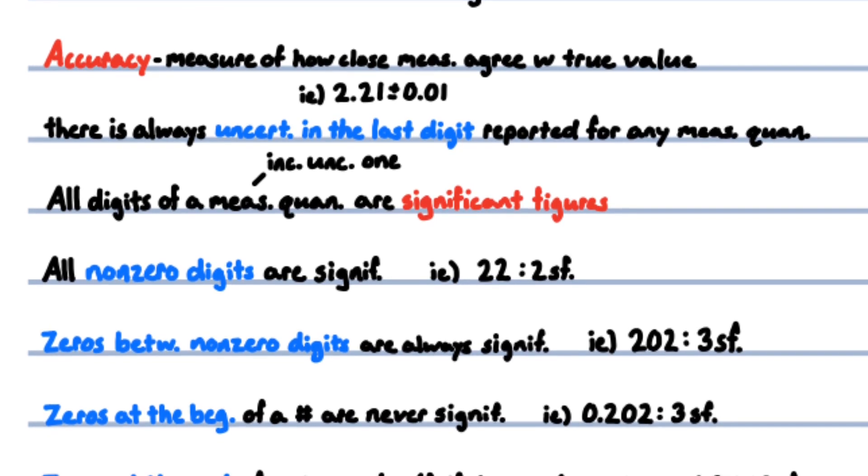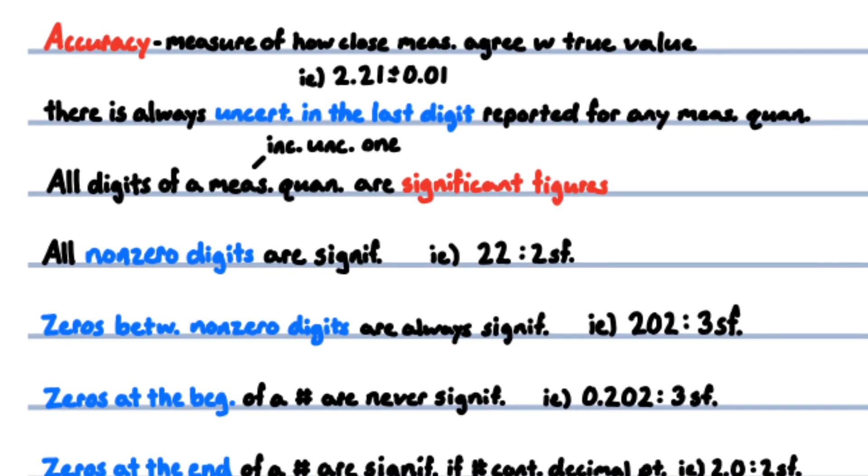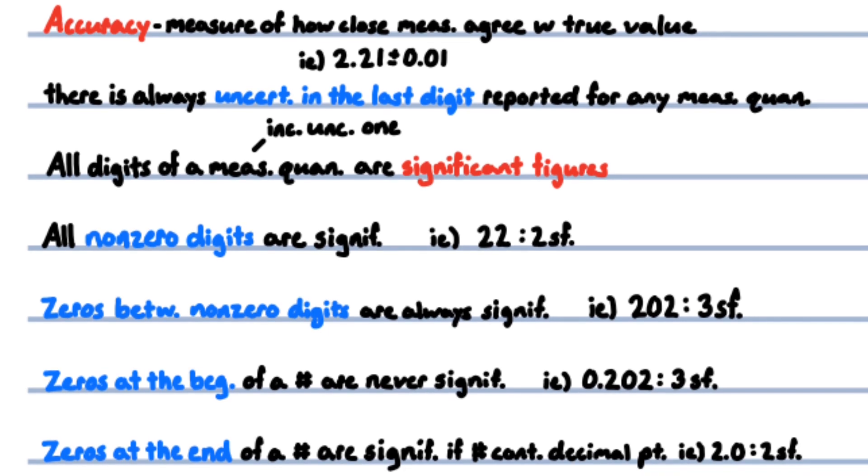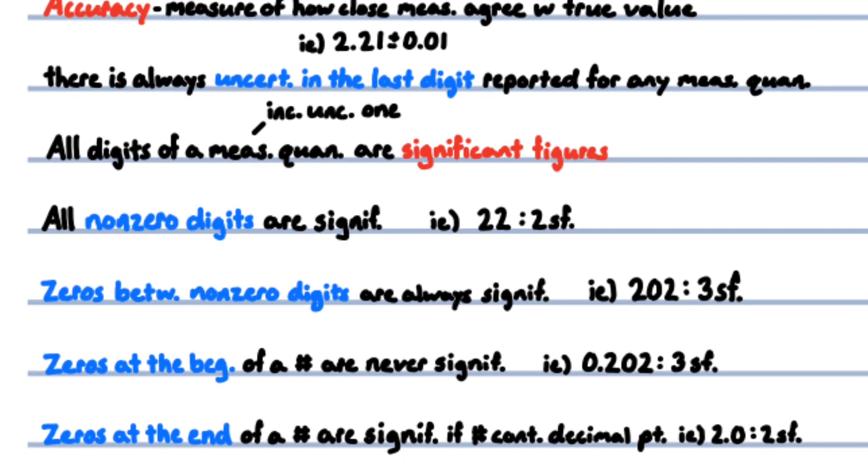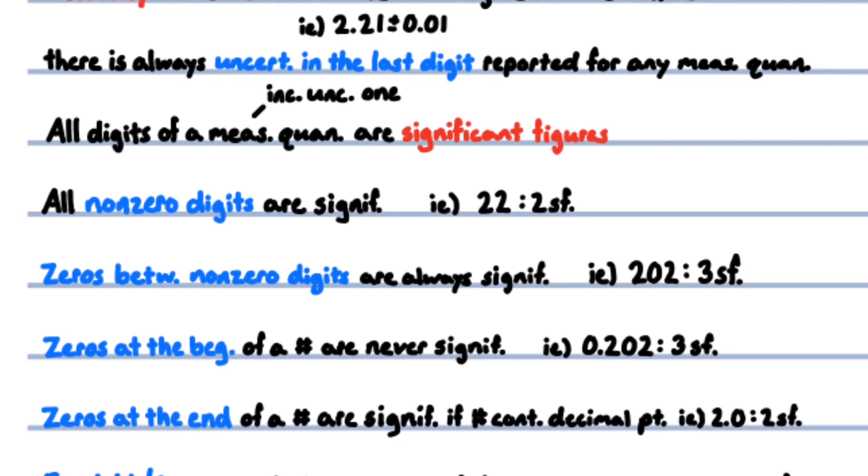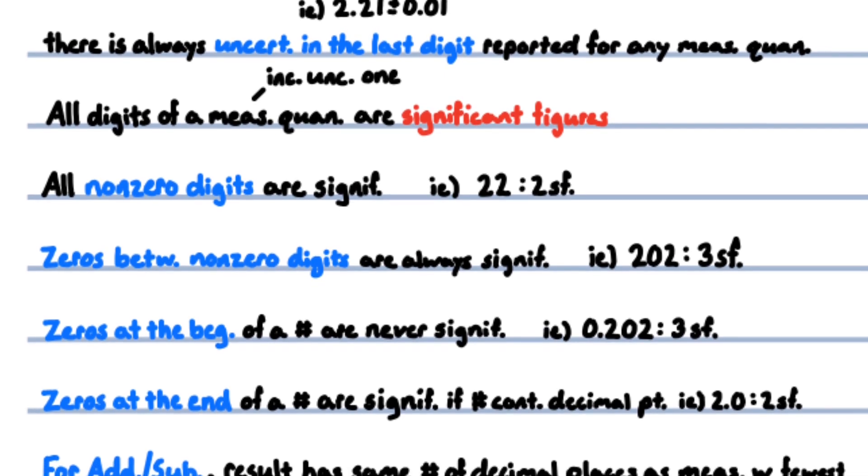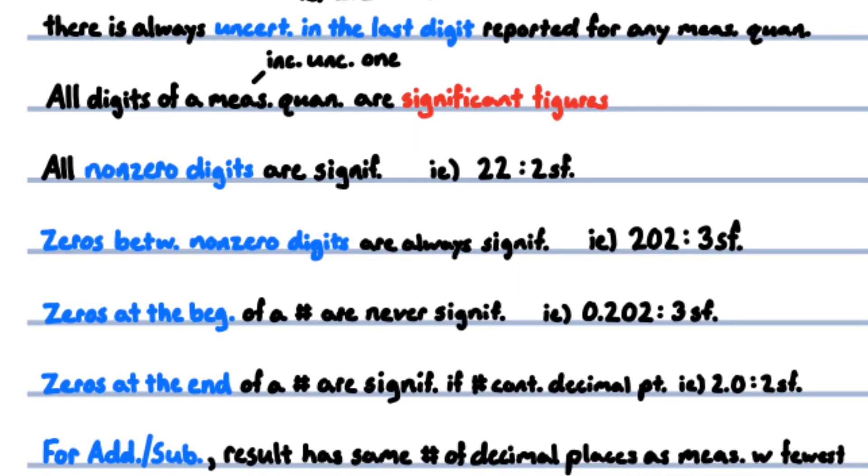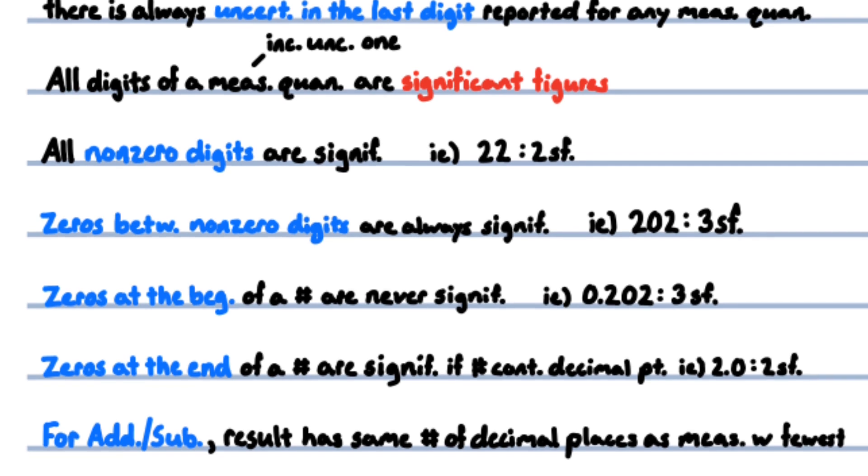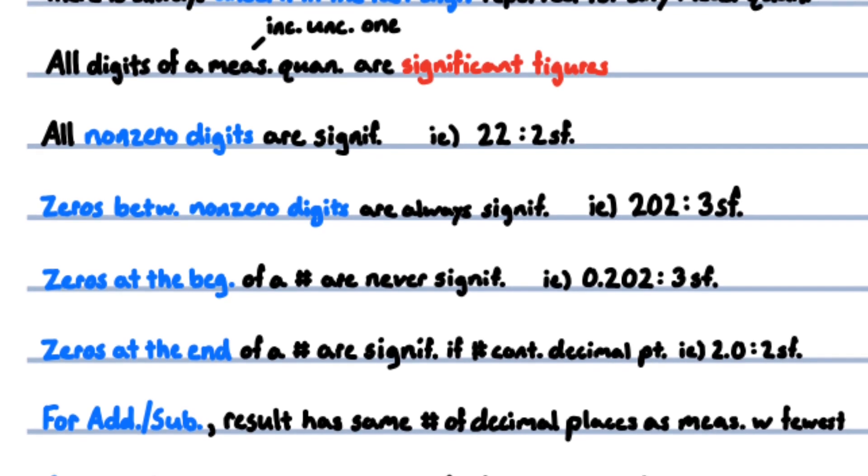All digits, including the uncertain one, of a measured quantity are significant figures. All non-zero digits are significant, for example, 22 has two significant figures. Zeros between non-zero digits are always significant, such as 202 has three significant figures. Zeros at the beginning of a number are never significant, they are merely placeholders, for example, 0.202 has three sig figs.